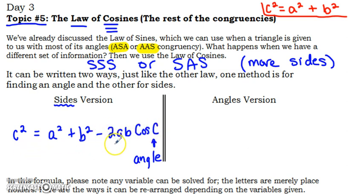This is the way we would use it if we were looking for a side. And then, if we needed an angle, the cosine of c would be equal to a² plus b² minus c² all over 2ab. Notice some of those same things are in here, just slightly rearranged so you're looking for the angle.